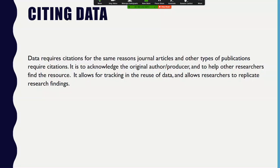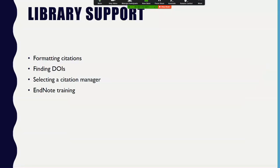Citing data: if you are reusing data, you still need to cite it just like any article you use. It has the same elements — author, volume, DOI, and so on. This also helps other researchers find the resource. Library support includes formatting citations, finding DOIs, using a citation manager, or writing annotations.